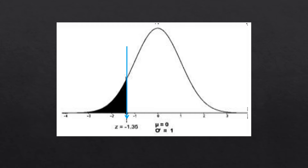To illustrate this, we have the normal curve and the Z score given is negative 1.35. This shaded area is what we are talking about — the value from the Z table is from the left, from negative infinity up to negative 1.35. So this is the probability of Z equals to negative 1.35.